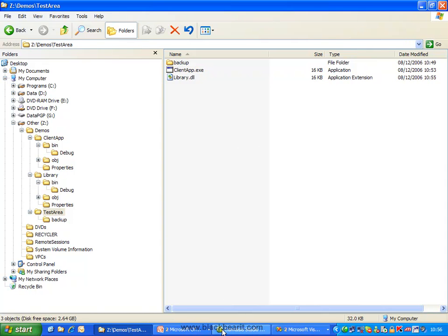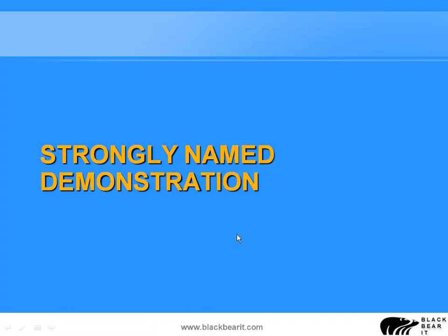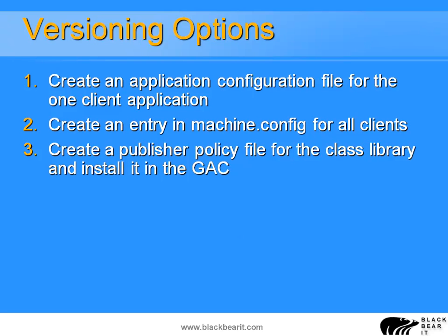Now that we've seen how to create a strongly named assembly, we want to look at the different options for how to force this application to use the new library. We have three ways of doing this. The first way applies mainly to private assemblies, and it allows us to create an application configuration file to redirect just this one client to the new version. Options two and three are really only used if you're installing your assemblies into the GAC — the global assembly cache — which allows a global value to be set in the machine.config file so that all clients point to the new version. The third option is called a publisher policy file, which is produced by whoever is producing the actual class library itself, and is also installed into the GAC. We'll do all three of these options in our demonstration.